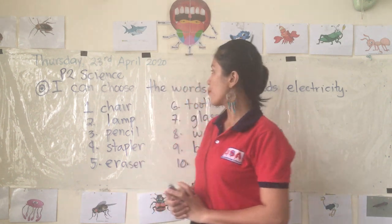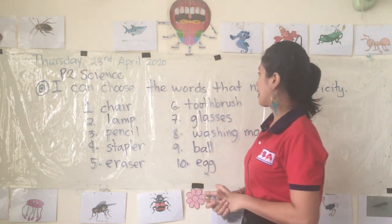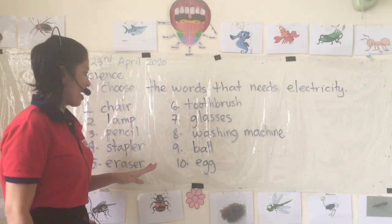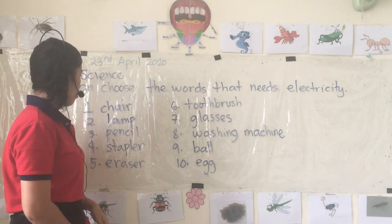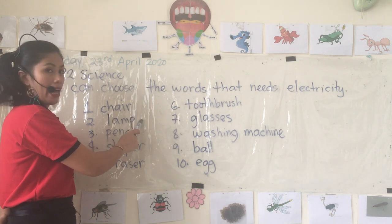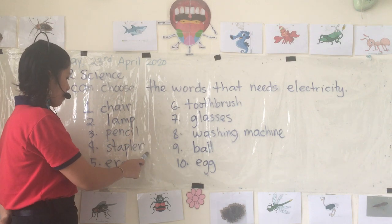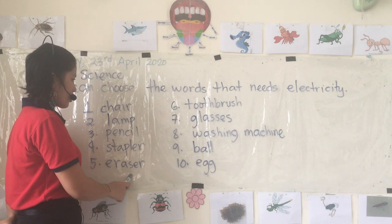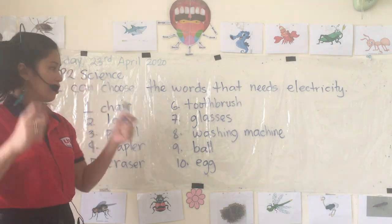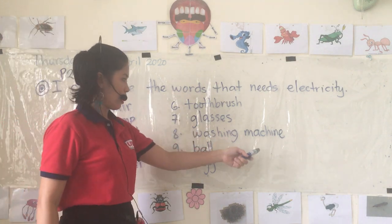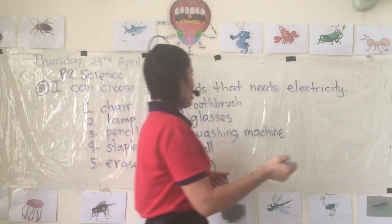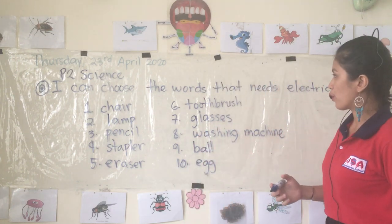So today we are going to choose the words that need electricity. So these are the things that I have written. There are ten things: a chair, lamp, pencil, stapler, eraser, toothbrush, glasses, washing machine, ball, and egg.